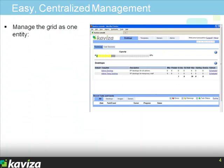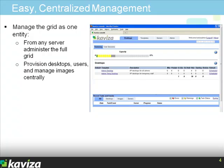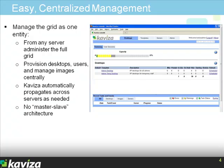You manage the Kaviza grid as one entity. You can point your browser at any one server in the grid, log in as an administrator, and get a grid-wide view. From there you provision desktops, connect users, and manage images on the grid. Kaviza automatically propagates those requests as needed across the servers.